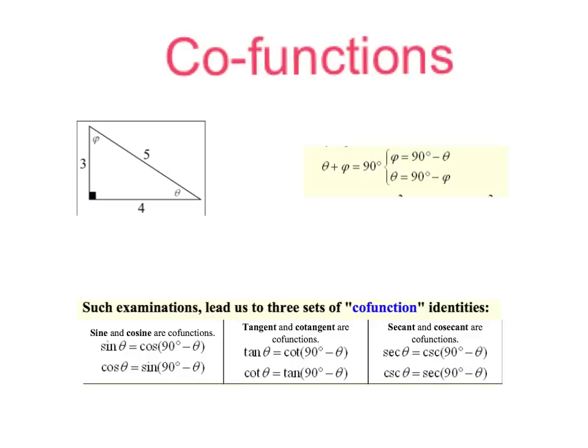The first of our two topics tonight is called co-functions. Take a look at this picture, and let's go ahead and get this in your notebook. We've got a nice right triangle. It's a Pythagorean identity. We've got a 3, 4, 5. And in each of these angles, I've labeled something different. I've got a theta down here, and we've got another Greek letter up here. Let's just call them something different.